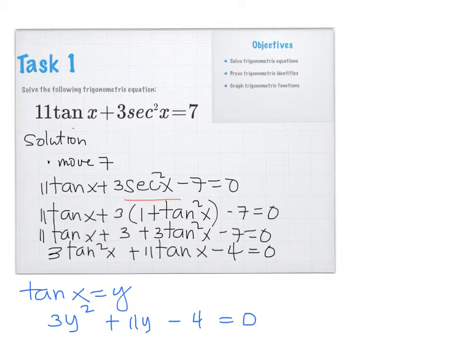Why do we need to change tan X into Y? Just to make it easier, so that you can clearly see the equation and what you can do next.